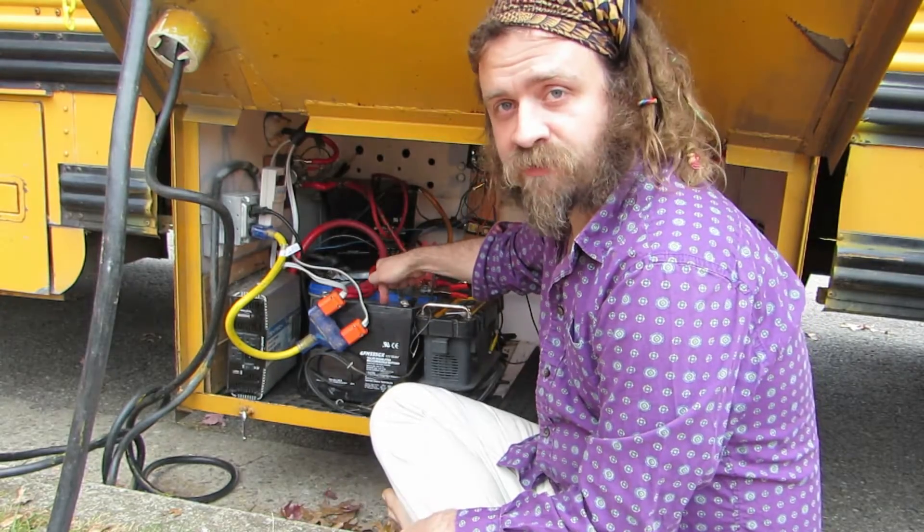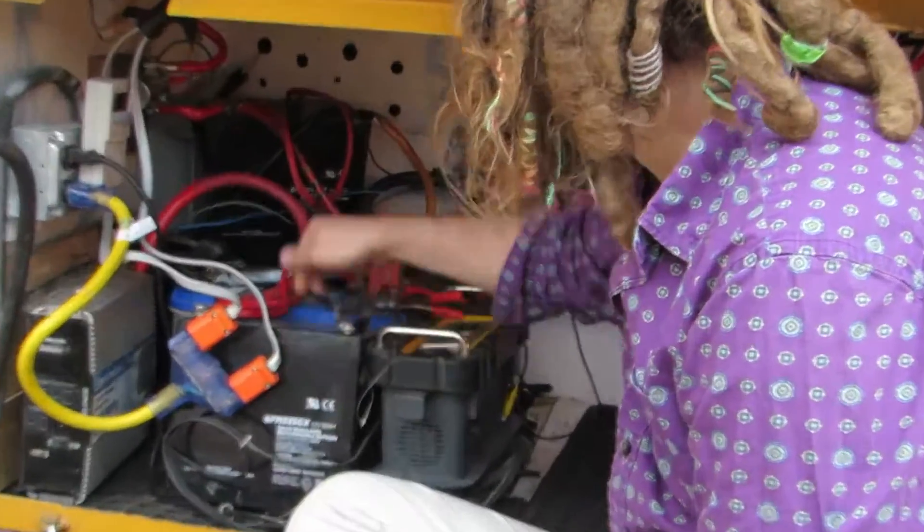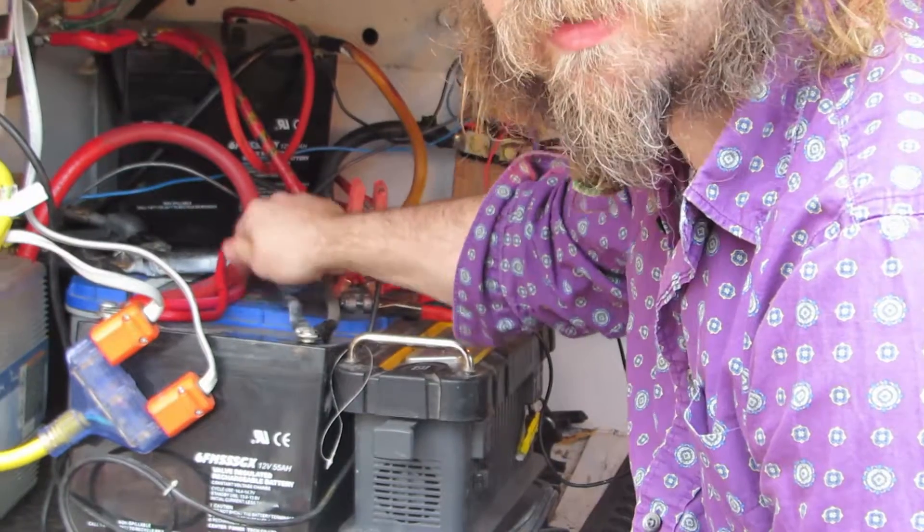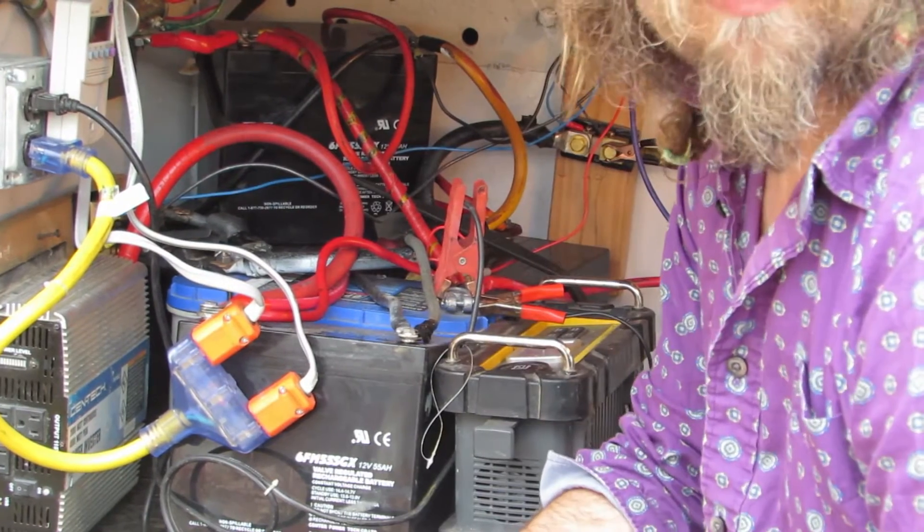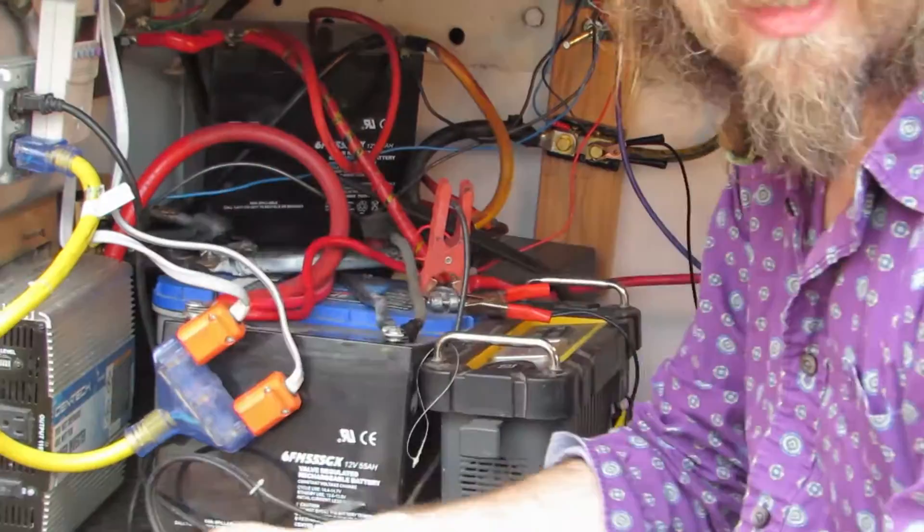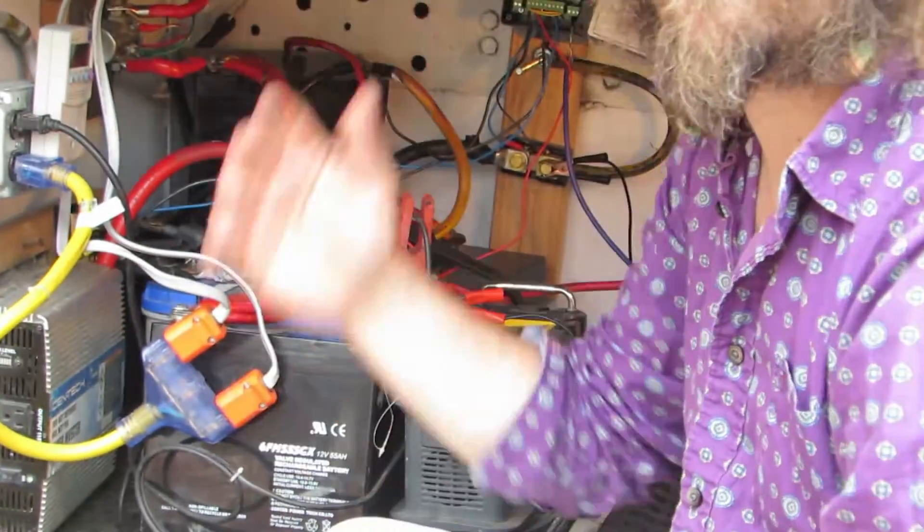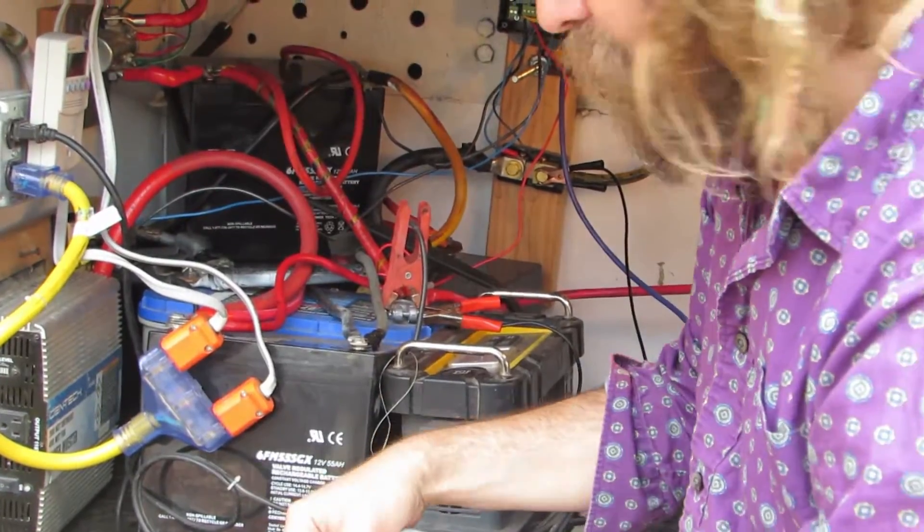By running the batteries in parallel, we're able to add the capacity to each other. So these little black ones are 55 amp-hour, and this Optima blue top, I think, is 90 amp-hour. And so, all told, we have in the mid-300s amp-hour, because we're combining the capacity of the batteries, so we have 350, 370 amp-hours, something like that.